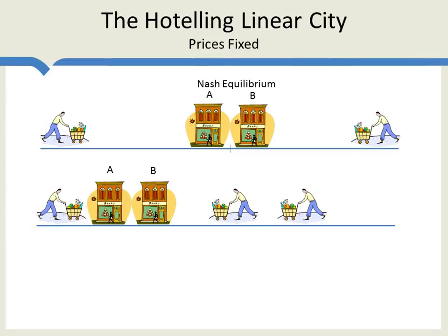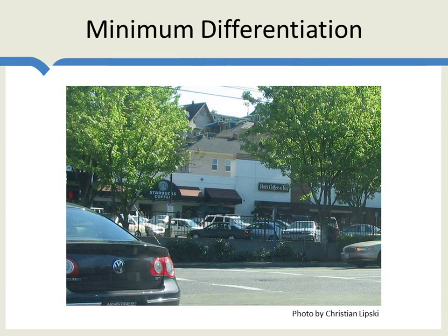Is this a realistic situation where prices are fixed? As we'll see, yes, sometimes it can be. In France, for example, booksellers aren't allowed to charge different prices. But there are other applications as well. We sometimes do see a principle of minimum differentiation in location decisions. Here's a Starbucks, and right next door we have Pete's. The prices at Starbucks and Pete's are going to be determined by national considerations and not set at every individual store. Thus, this is an example of a location decision where prices are fixed.